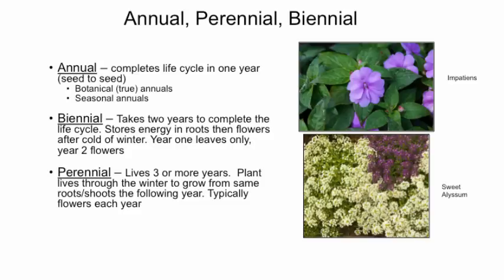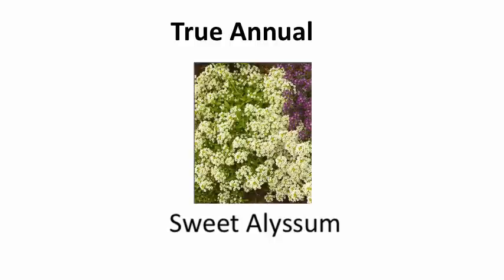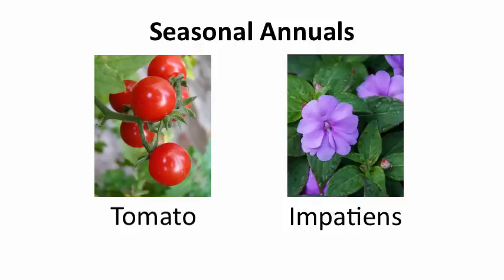Annual plants fall into two functional groups: those that are true annuals, which complete their life cycle in one year or growing season even if good growing conditions continue, and seasonal annuals, which are perennial plants in warmer climates but die locally when cold weather sets in. Almost all annuals planted in landscapes are seasonal annuals. A common example of a true annual is sweet alyssum, while tomatoes and impatiens are seasonal annuals.